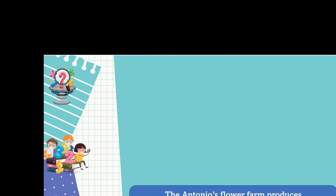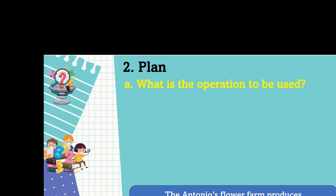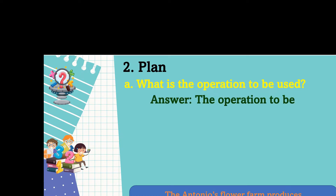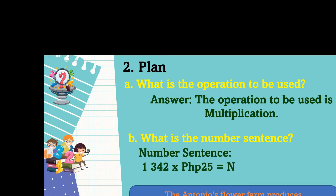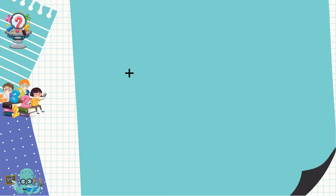We already understand the problem. The next step is to make a plan. What is the operation to be used? Looking back to our problem, the operation to be used is multiplication. What is the number sentence? Since our operation is multiplication, the number sentence is 1,342 times 25 pesos is equal to N.